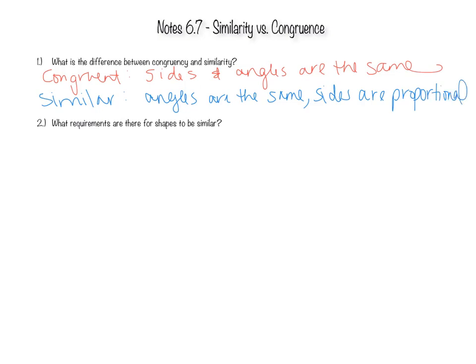So what requirements are there for shapes to be similar? First requirement: proportional sides. And the second one is congruent angles. Remember, congruent means the same.